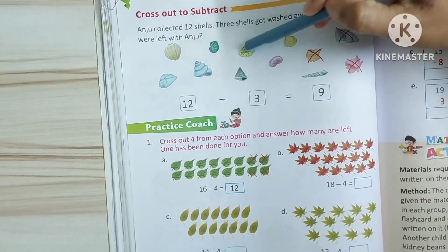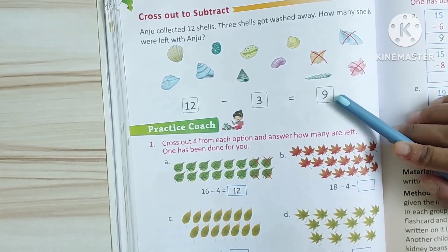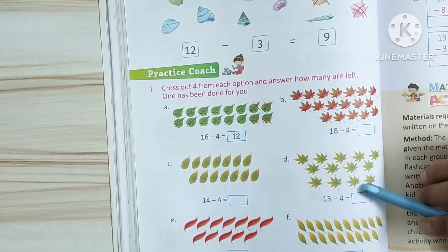See. 1, 2, 3, 4, 5, 6, 7, 8, 9. Answer is 9. Okay. This is how many shells are left.